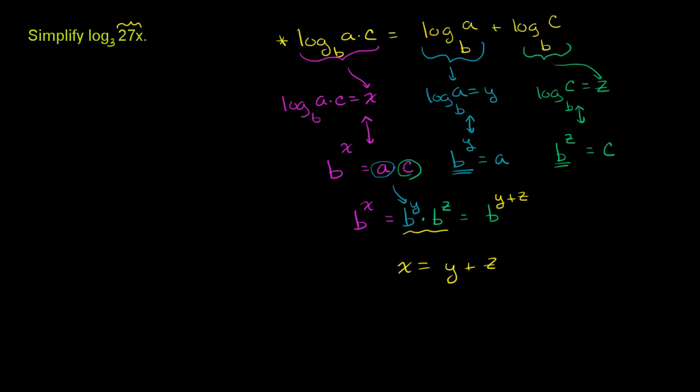So if we apply it to this one, we know that log base 3 of 27 times x is equal to log base 3 of 27 plus log base 3 of x. And then this right over here we can evaluate.